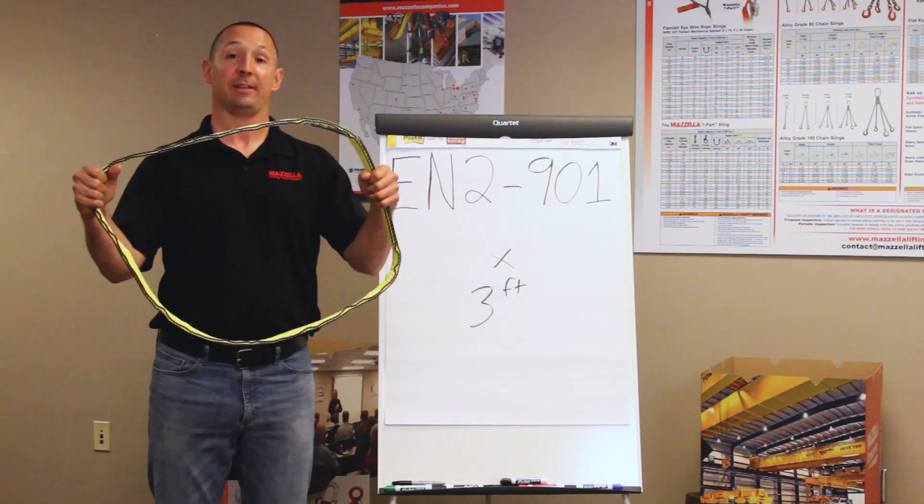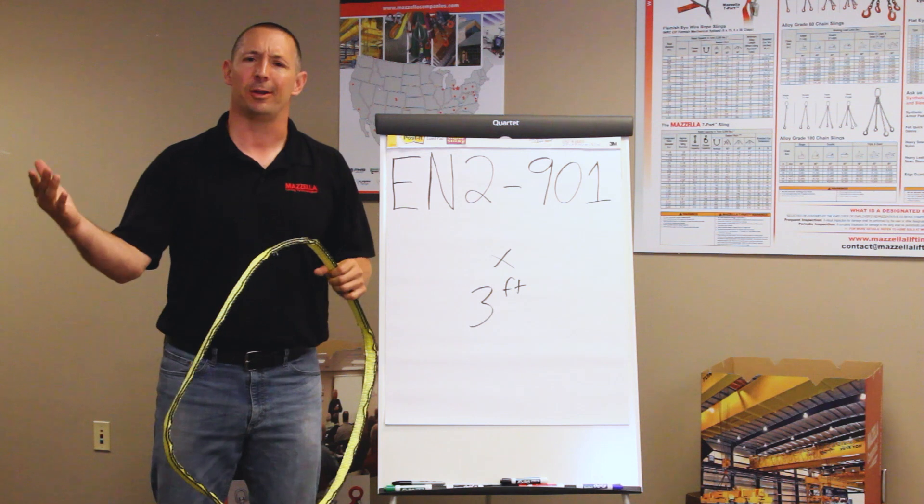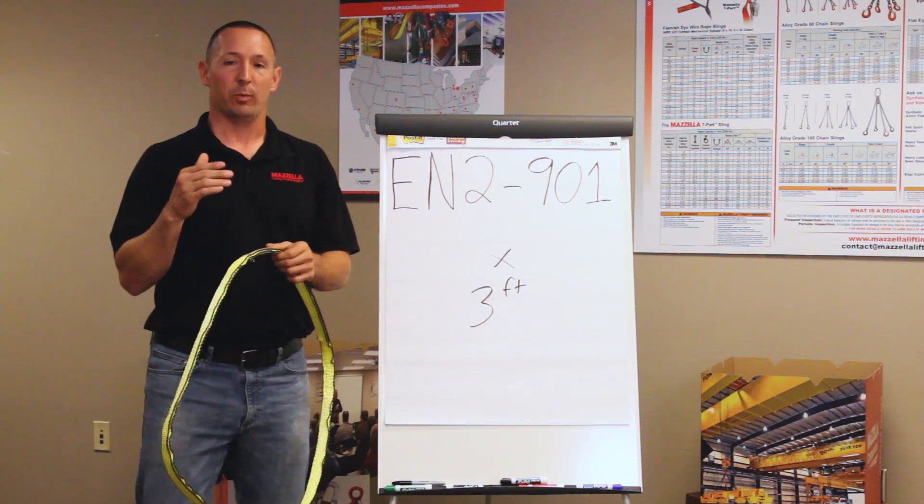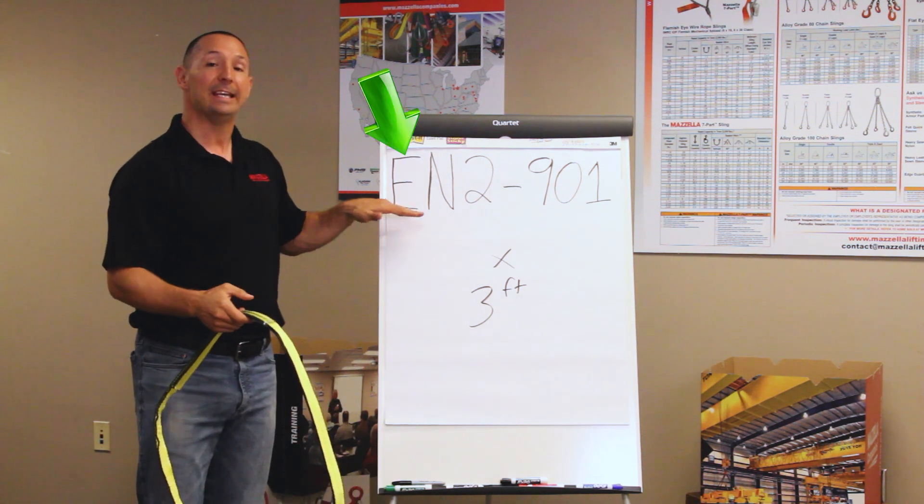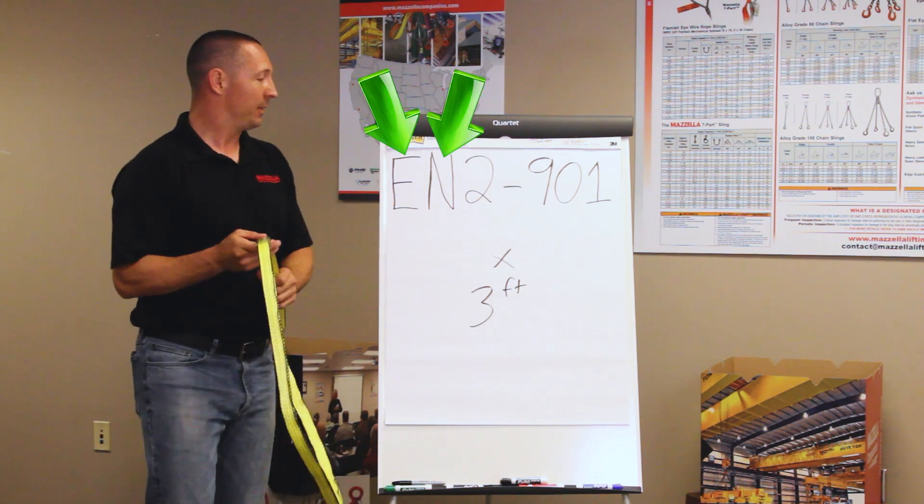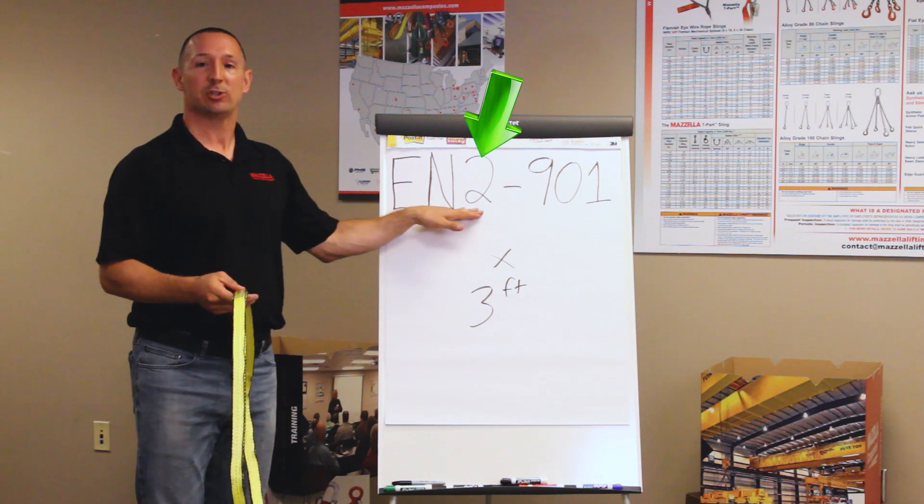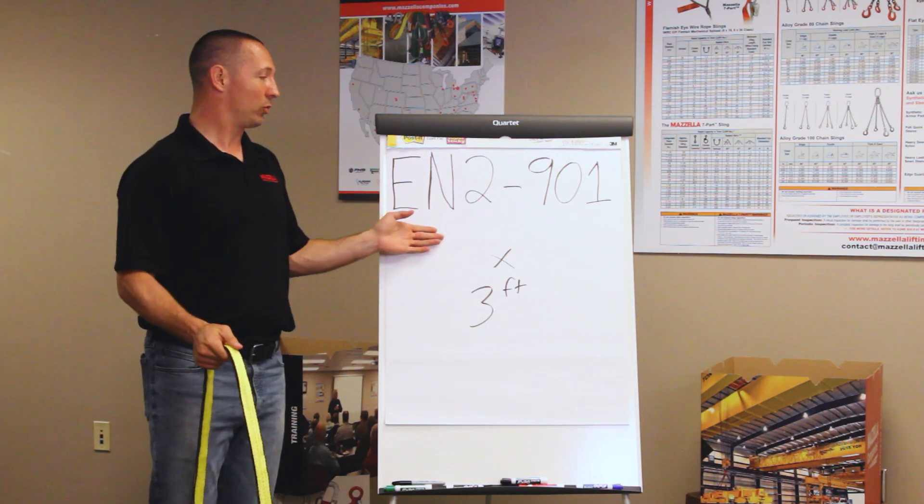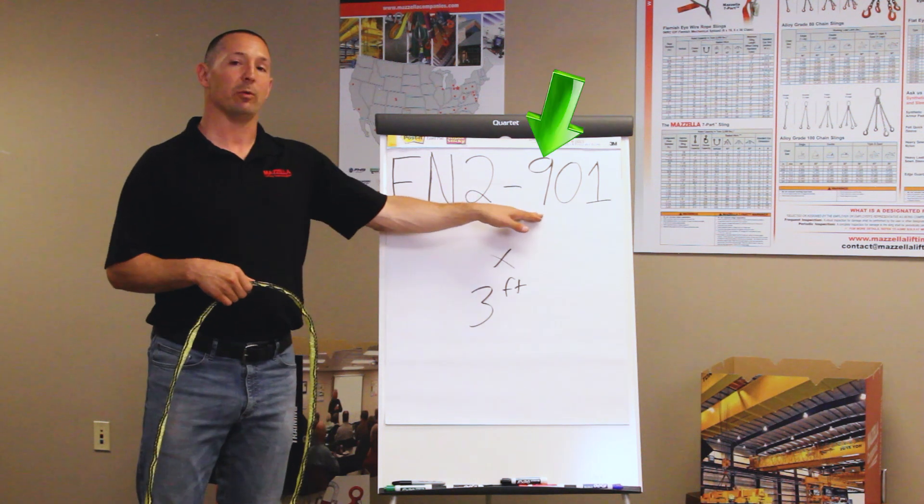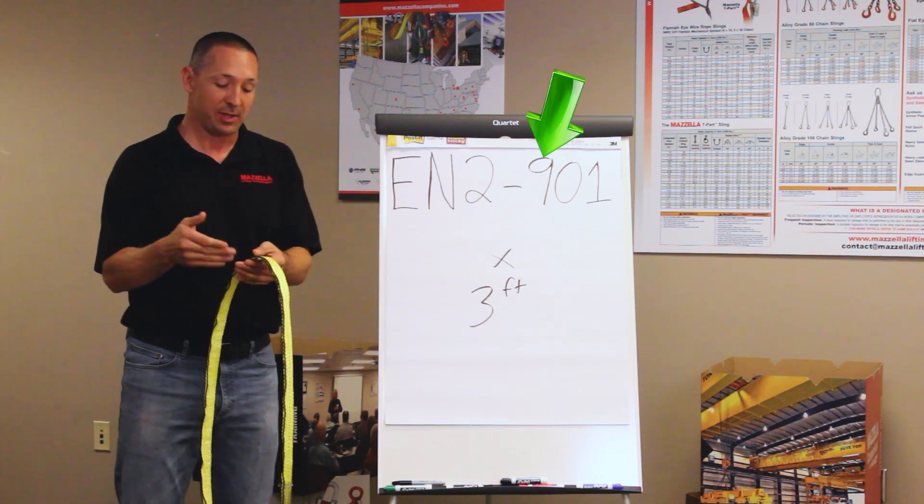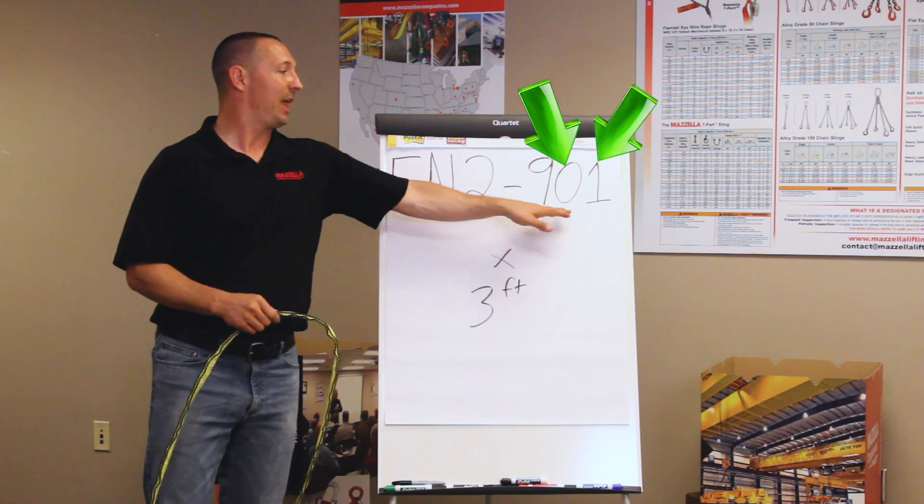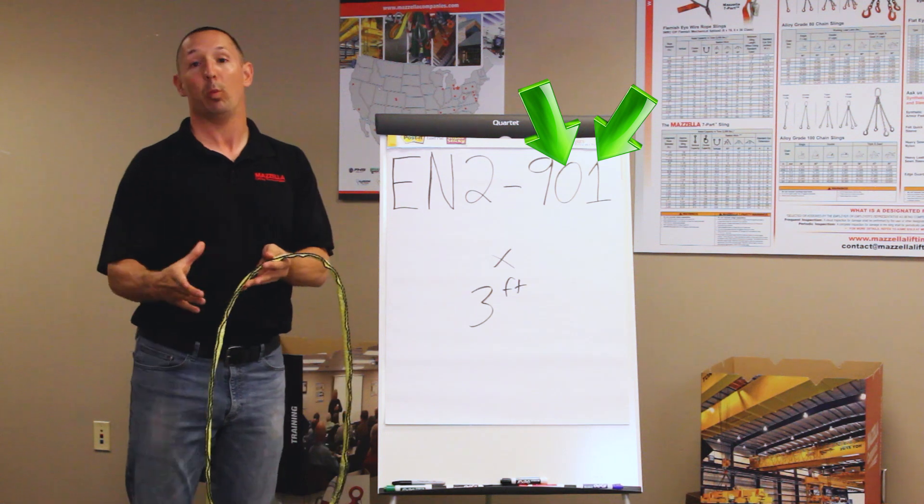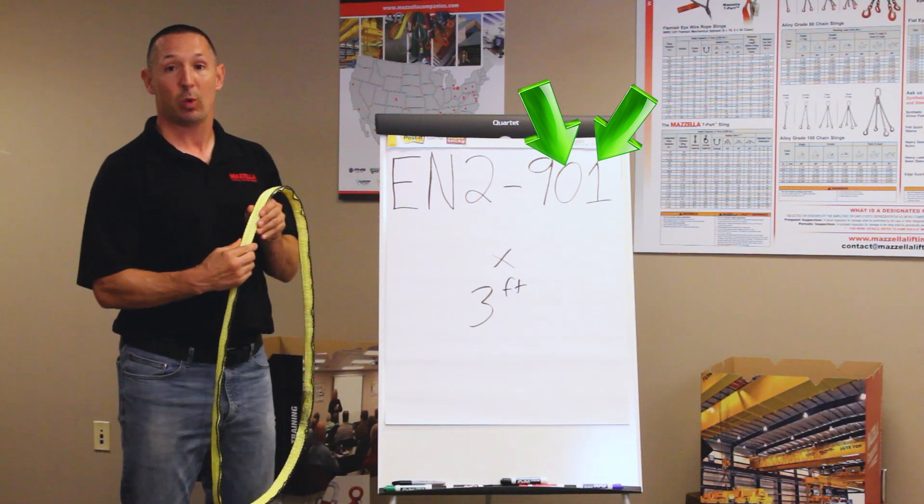So another popular flat web sling that you may see out there is what we call an endless sling. Some people may call it a continuous loop or an infinity loop. But when we designate the verbiage on a sling like this, we're going to start off with EN for endless. We talked again about the plies. We've got two plies on this sling denoting its strength. We've got the number nine right here. We talked about having edge guard or not having edge guard. This number nine shows that it's got a little bit of black edge guard on here to protect it. And then these last two numbers right here talk about the width. So this is a one inch wide endless sling.